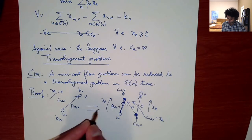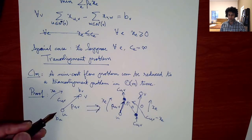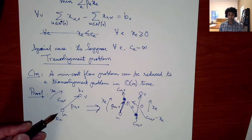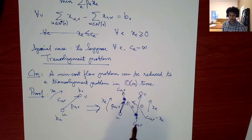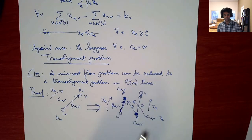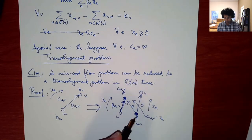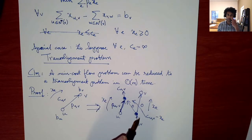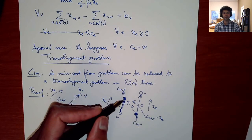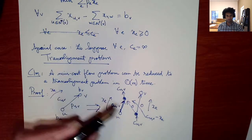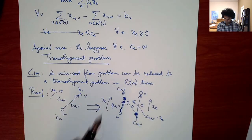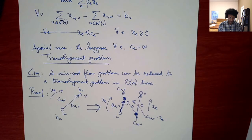So the min cost flow problem converts to a transshipment problem in linear time, by adding an extra source pumping C_{UV} units and a new sink with demand C_{UV} for each edge.